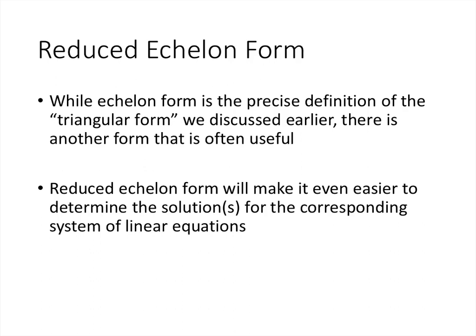Now let's talk about what we call reduced echelon form. Echelon form is the precise definition of what we were calling triangular form earlier. There is another form that's also useful — reduced echelon form — which is a little bit stricter. But it's going to make it even easier to determine the solutions for the corresponding system of linear equations, which is our whole goal with all this matrix work.